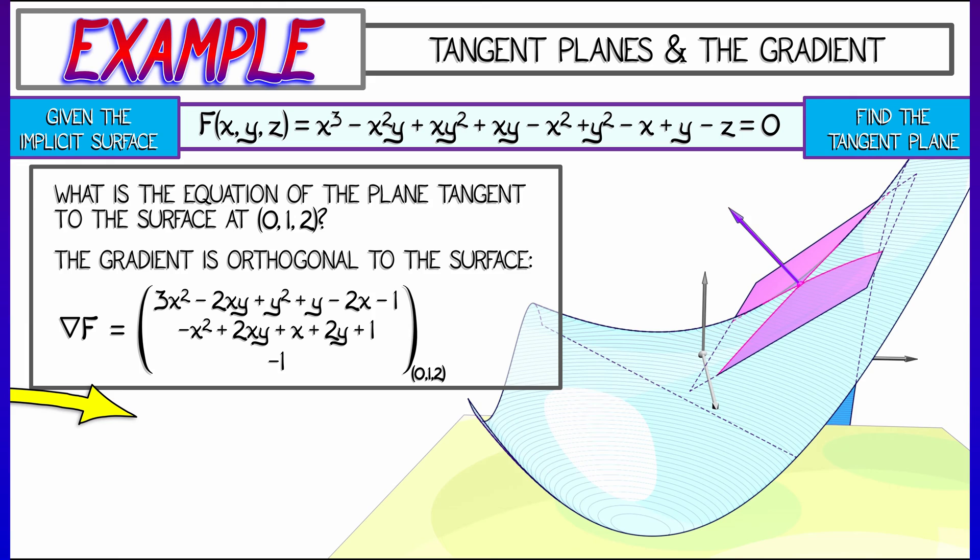Evaluate these at x equals zero, y equals one, z equals two to get the vector 1, 3, negative one. That is a vector orthogonal to this level set at that point.